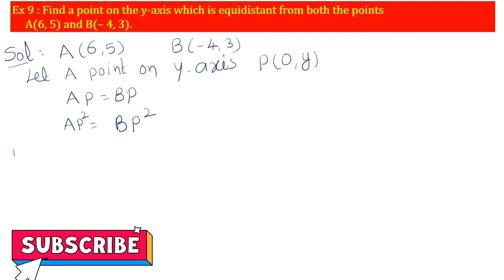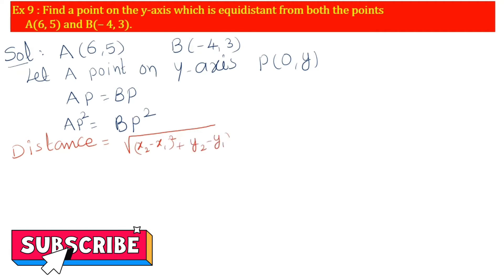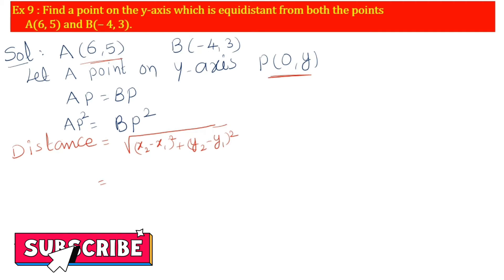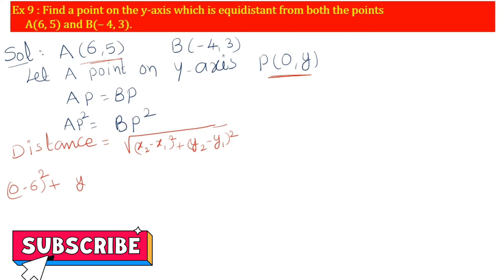We use the distance formula: distance = √[(x₂ - x₁)² + (y₂ - y₁)²]. Apply AP². P is (0, y) and A is (6, 5), so AP² = (0 - 6)² + (y - 5)².